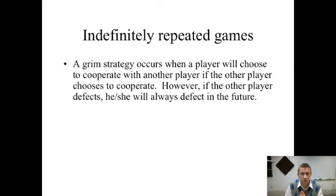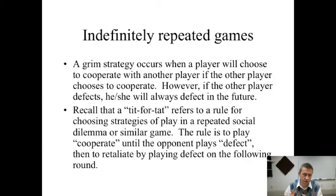So the grim strategy is cooperate, but if your opponent defects, you'd always defect. The tit for tat strategy says that you'll cooperate, but if your opponent defects, you will respond by defecting in the next time period. So the rule is you play cooperate until your opponent defects, but then you retaliate by playing defect in the following round. The tit for tat strategy indicates though is if your opponent defects, then starts to cooperate again, you can cooperate with them again in the future. The grim strategy would indicate it will never happen.